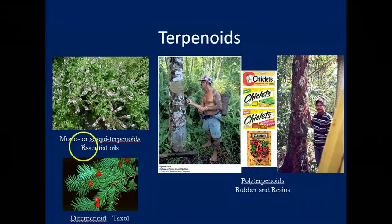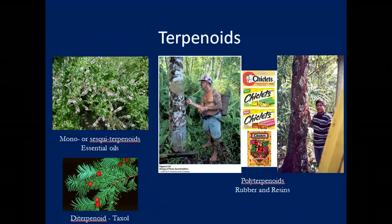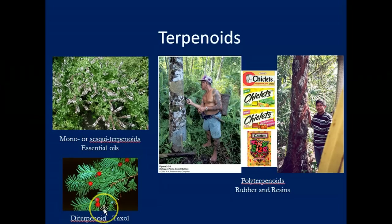Another type of terpenoid is a diterpenoid, and an example of that is Taxol. As Mark Plotkin discussed, Taxol has anti-cancer properties — it has been shown to shrink ovarian and breast cancers. It is harvested from the bark of the Pacific yew tree, which is the plant you can see here that produces this terpenoid.